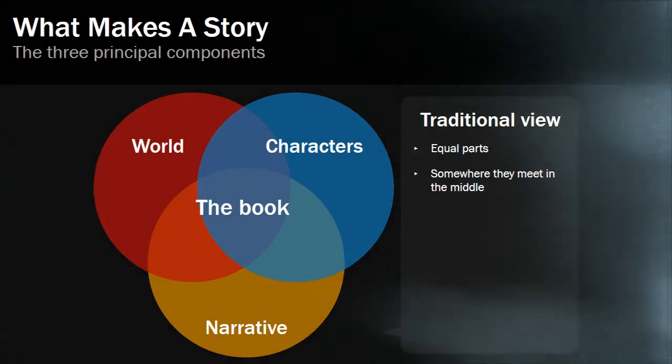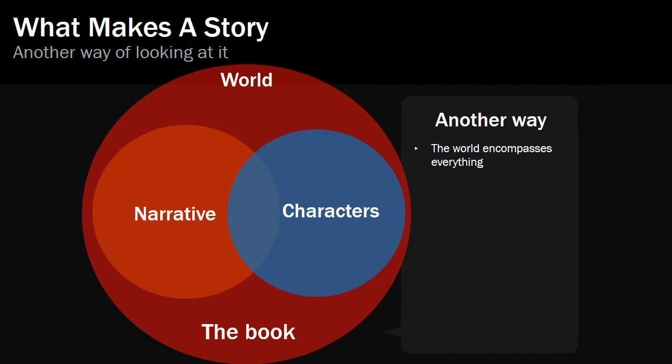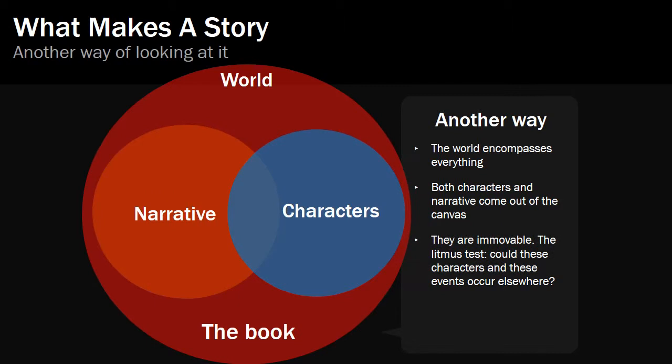But there is another way. What if these parts aren't equal, and the world encompasses everything? And characters and narrative come out of that world rather than sit alongside it? I have a simple litmus test for my work: could it happen elsewhere? Could the Nick Costa stories simply be transposed to Vienna? Would Sarah Lund work in Birmingham? If the answer's yes, I've got something wrong. If you want to work like this, first you must build your world — before your characters and before your plot. There really is no alternative.